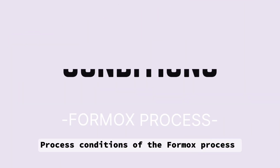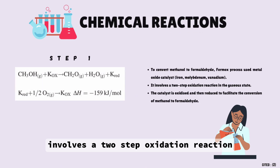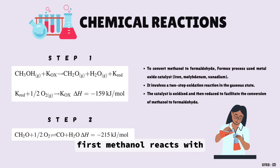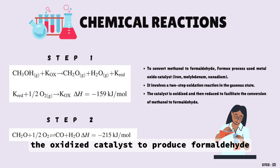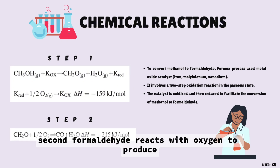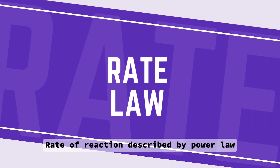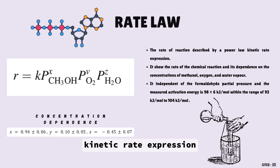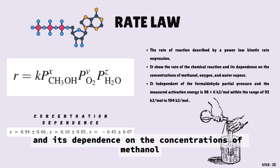The Formix process involves a two-step oxidation reaction in the gaseous state. First, methanol reacts with an oxidized catalyst to produce formaldehyde, water, and the reduced catalyst. Second, formaldehyde reacts with oxygen to produce carbon monoxide and water. The rate of reaction is described by a power law kinetic rate expression.